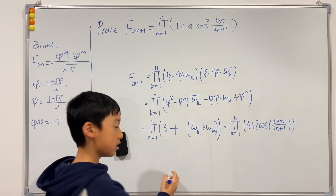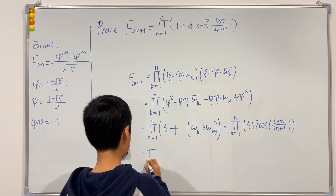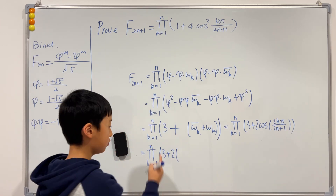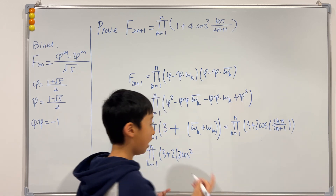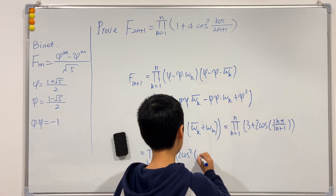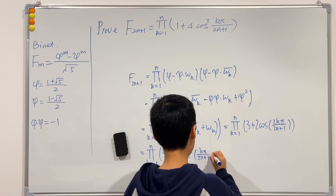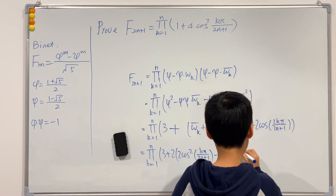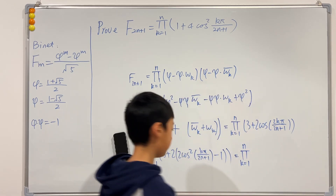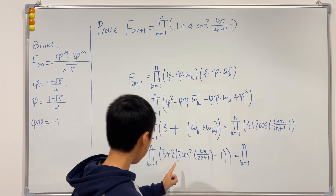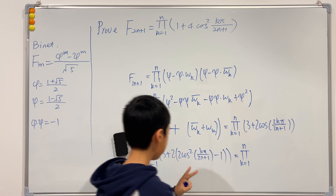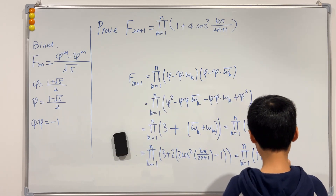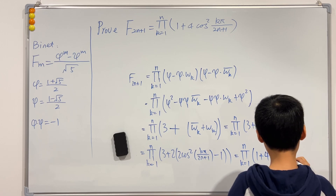Applying the double angle formula — 2cos(θ) = 2(2cos²(θ/2) − 1) — the expression 3 + 2cos(2kπ/(2n+1)) becomes 3 − 2 + 4cos²(kπ/(2n+1)) = 1 + 4cos²(kπ/(2n+1)).